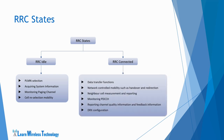In RRC connected state, the UE has an RRC connection with EUTRAN. The UE has its context available in EUTRAN, and EUTRAN knows which cell the UE belongs to. Data can be transferred between UE and network. The UE performs network-controlled mobility such as handover and redirection, and performs neighbor cell measurement and measurement reporting as configured by the RRC.